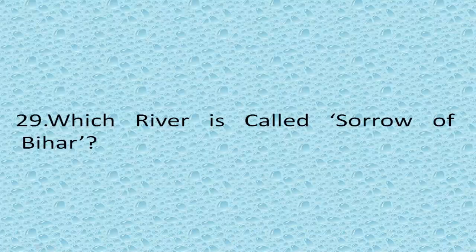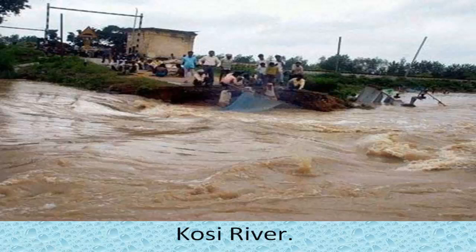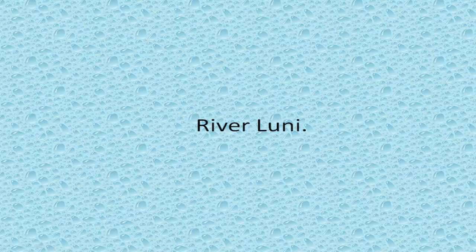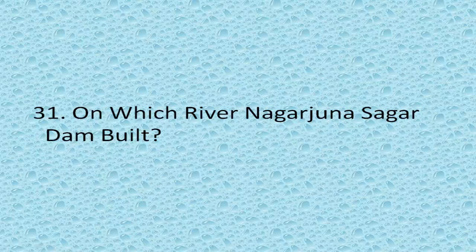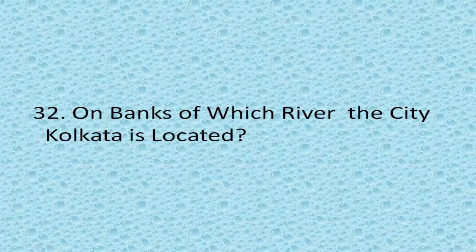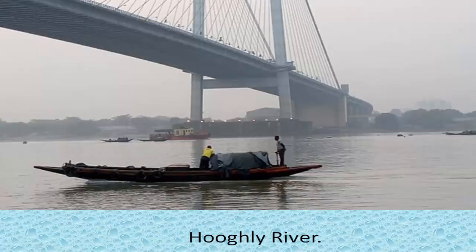Which is the world-famous waterfall on Sharavati River? Jog Falls. Which river is called the Sorrow of Bihar? Kosi River. Which river in India is known as Salt River? River Luni. On which river was the Nagarjuna Sagar Dam built? Krishna River. On the banks of which river is the city of Kolkata located? Hooghly River.